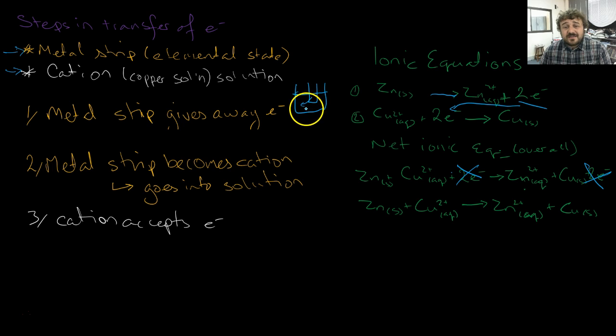The cation accepts the electrons. So we've got this here. So it takes the electrons which this is giving away, and they deposit up here as in the elemental state. So we'll write deposits there. And that's us. That's how that works.